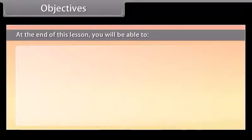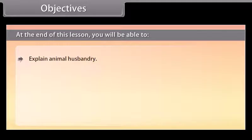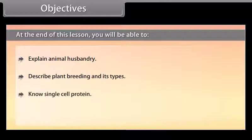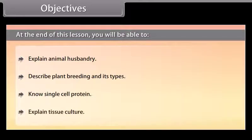Objectives. At the end of this lesson, you will be able to: explain animal husbandry, describe plant breeding and its types, describe single cell protein, and explain tissue culture.